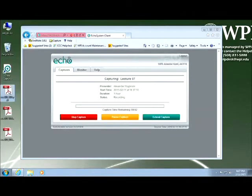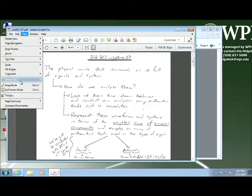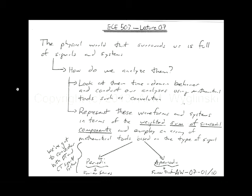This is lecture 7 of ECE 503, and today's lecture is really important because it sets the context of why we have signal processing in the first place, or one of the reasons for having signal processing.